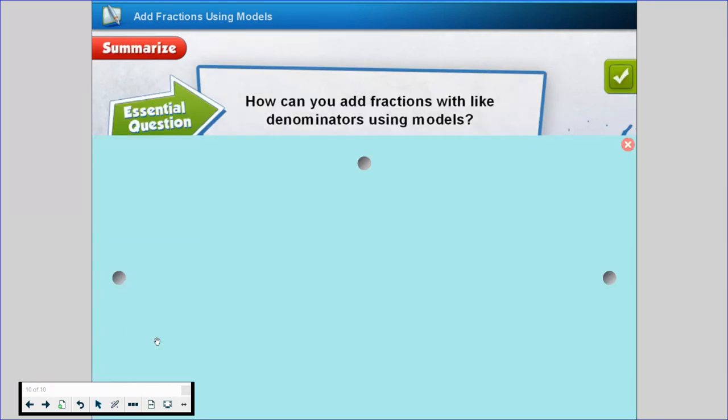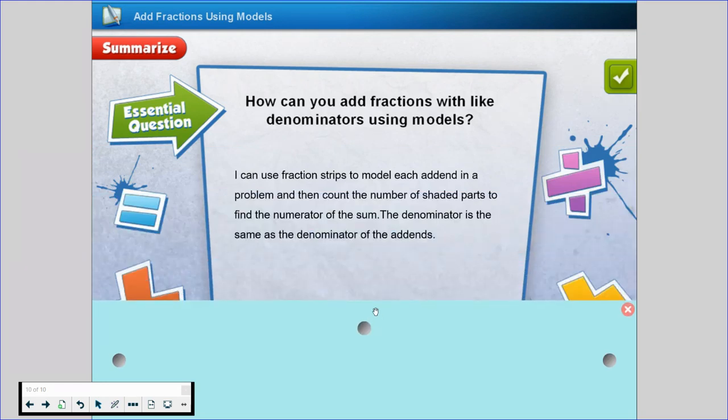All right guys, let's go back to our central question here: How can you add fractions with like denominators using models? So I can use fraction strips to model each addend in a problem and then count the number of shaded parts to find the numerator of the sum. The denominator is the same as the denominator of the addends. Well guys, I hope this review helped you out and I'll see you all next time. Bye.